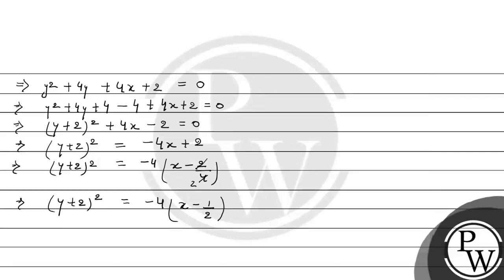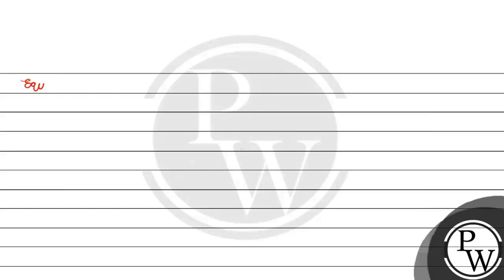Now we compare it in standard form. The parabola standard equation is Y squared equals minus 4X, where Y equals y plus 2 and X equals x minus 1 by 2. Using this substitution and the key concept, we can find the equation of directrix.